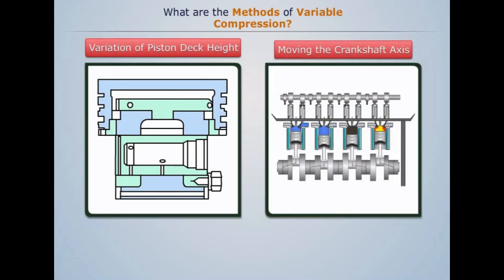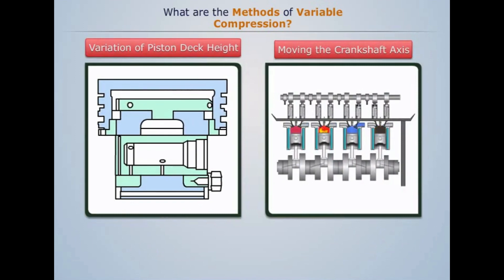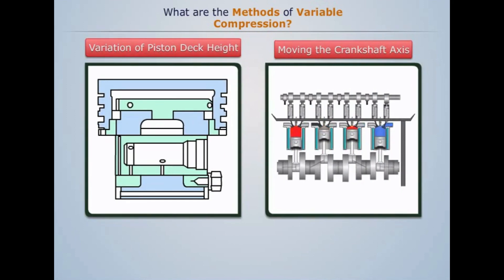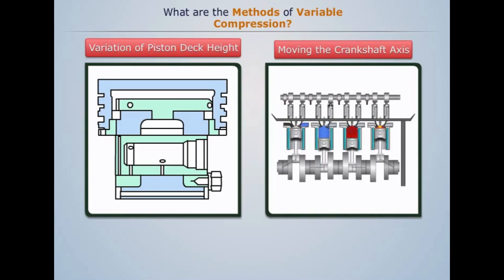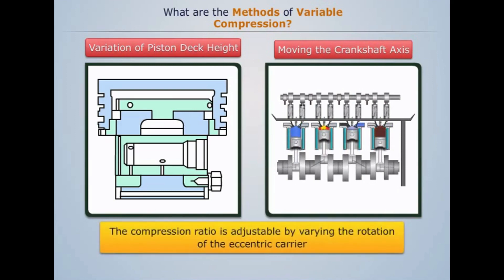Moving the crankshaft axis: In this method, crankshaft bearings are carried in an eccentrically mounted carrier that can rotate to raise or lower the top dead center positions of the pistons in the cylinders. The compression ratio is adjustable by varying the rotation of the eccentric carrier.